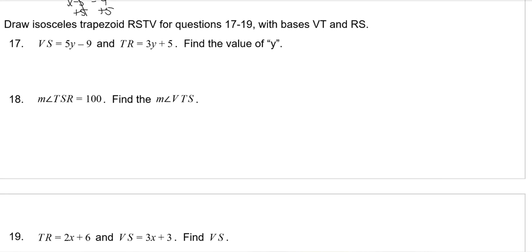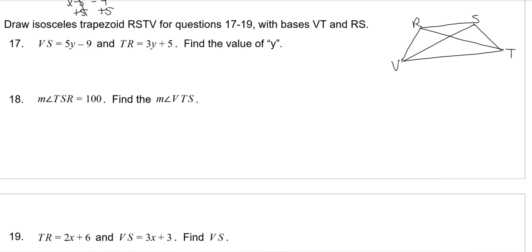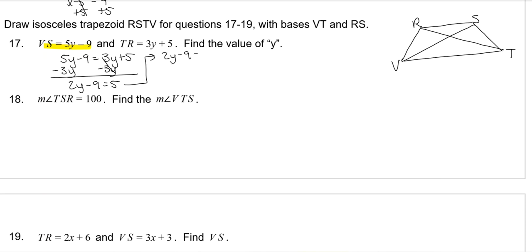Now we have an isosceles trapezoid with bases RS and TV and diagonals VS and TR. Diagonals on isosceles trapezoids are congruent, so we set these equal and solve. Subtract 3Y from both sides: 2Y minus 9 is equal to 5. Add 9 to both sides: 2Y is equal to 14. Divide by 2, and Y is 7.